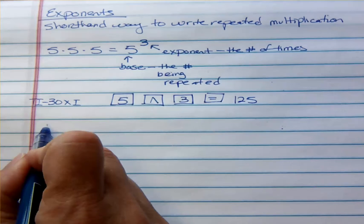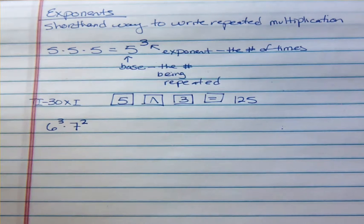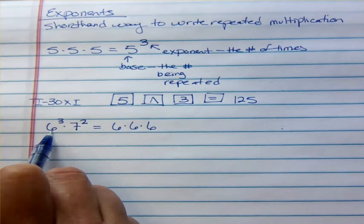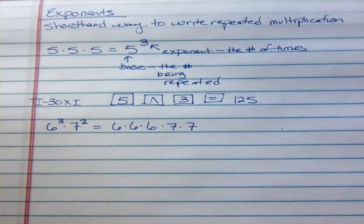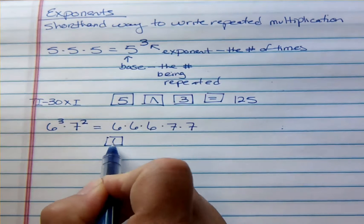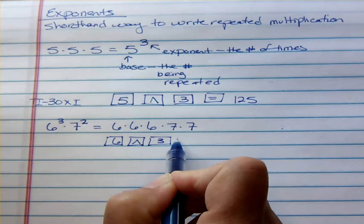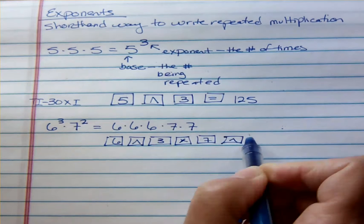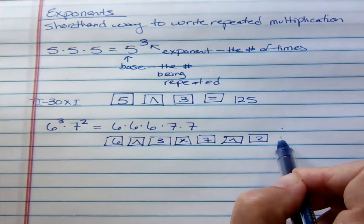So if you have 6 to the third times 7 to the second and you want to write that out in longhand form, that equals 6 times 6 times 6, because our base is 6 to the power 3, and then times 7 times 7. That's not how you'd want to put it into your calculator — you just want to put in the 6, the caret, the 3, then times, then the 7, the caret, and the 2. Then just hit enter or equals and you'd get your answer.